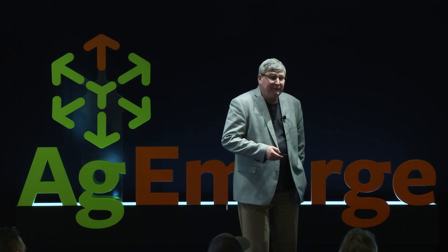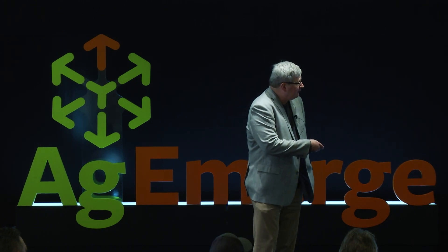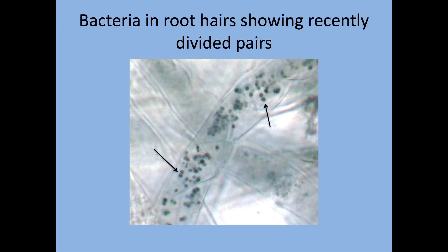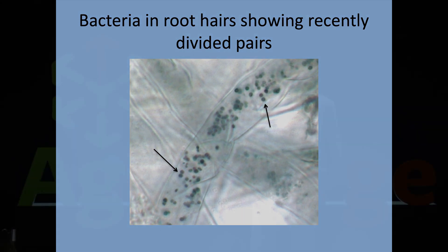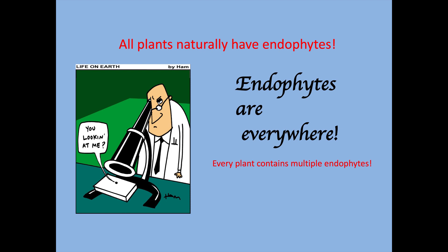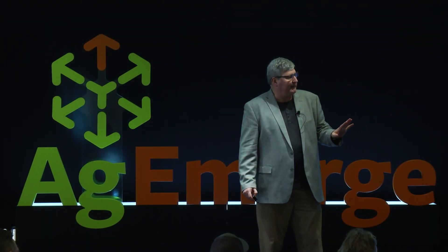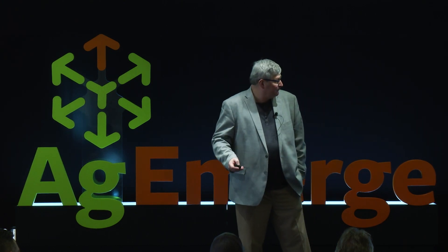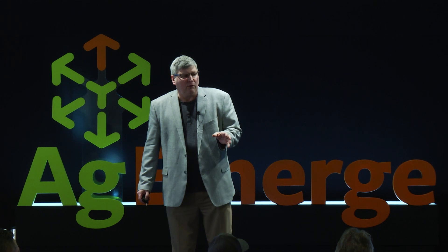Endophytes can be fungi, like the image I showed before, or they can be bacteria. This is a root hair of a plant, and you can see these recently divided pairs of bacteria actually inside those root hairs in the root cell. They're inside the cell but outside the plasma membrane — inside the cell wall — so they're in what we call the paraplasmic space. Endophytes are everywhere. All plants have endophytes — in fact, multiple endophytes: fungi and multiple species of bacteria. There's a small community inside plants.